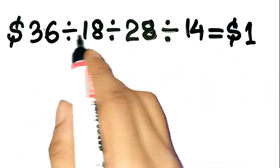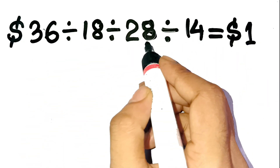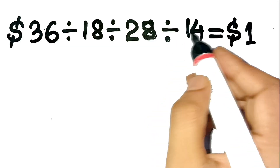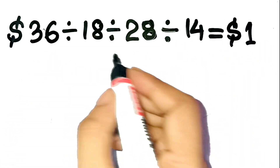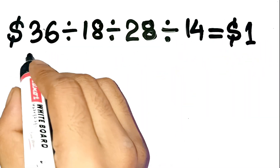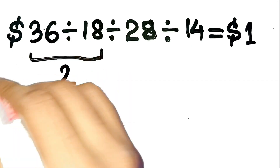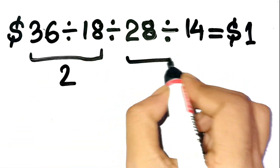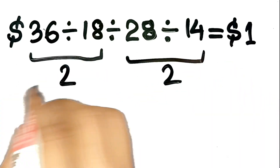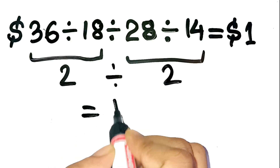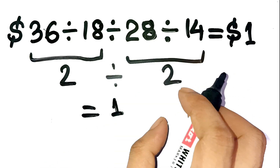You see $36 divided by $18 divided by $28 divided by $14, and your brain instantly goes: $36 divided by $18 is $2, $28 divided by $14 is $2, and $2 divided by $2 equals $1. Boom! Done! Right?